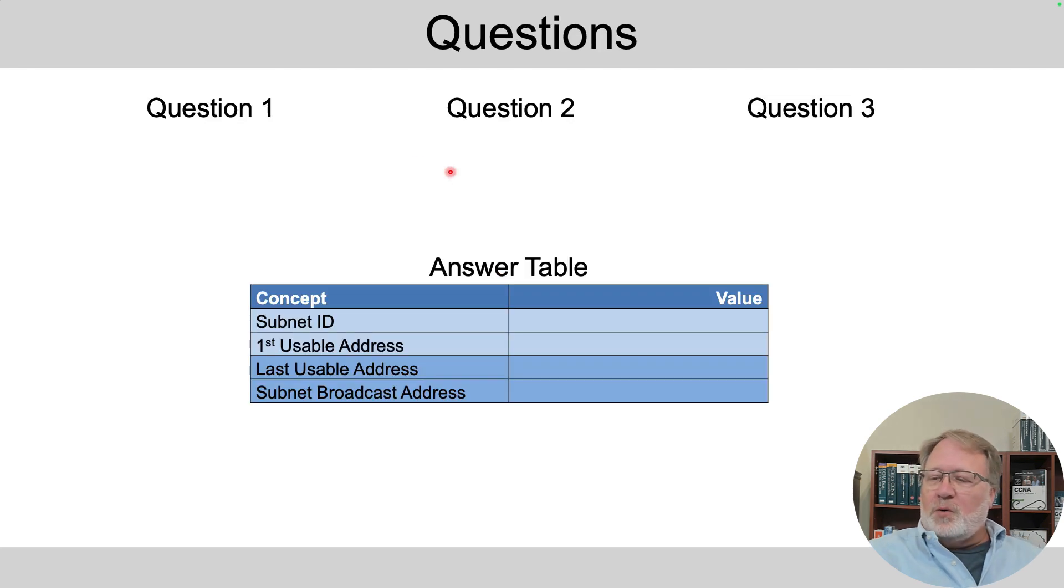So I'm going to put the three questions right up here. Once you see each one, hit pause in the video. You can even time yourself if you're to the point of wanting to know how fast you're going. So once I reveal those, I want you to figure out the subnet ID and subnet broadcast address, which is the harder part. And then once you know those, find the first and last usable addresses in the subnet.